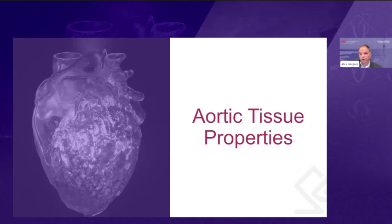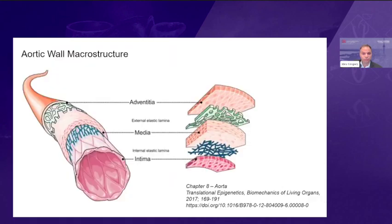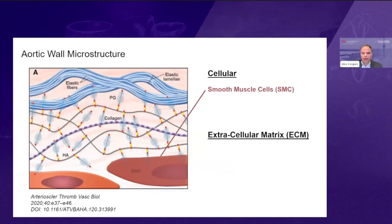Let's start with aortic tissue properties, which define how the aorta behaves when stressed during the cardiac cycle. The macrostructure is familiar to most — we have the three layers of the intima, the media, and the adventitia. I'm going to go a bit more into the microstructure, which is what really gives the mechanical properties of the tissue.